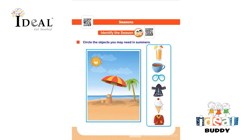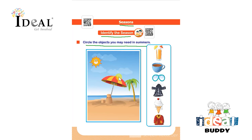Hello everyone. In this page the topic is seasons. Here the child has to identify the season. The activity says circle the objects you may need in summers. So here you have to discuss with the child about the summer season and ask what all things they need in summer season.